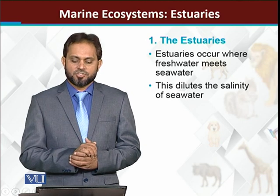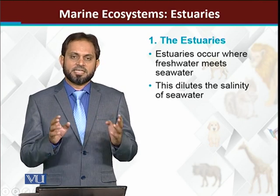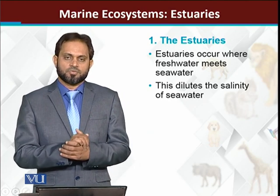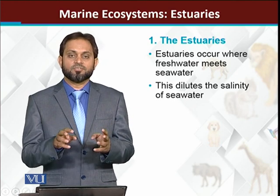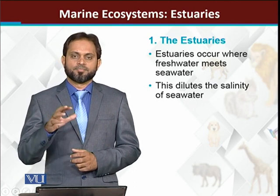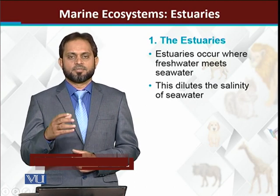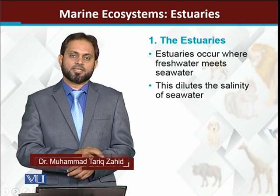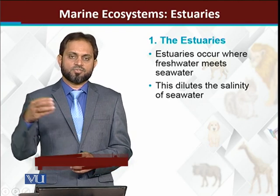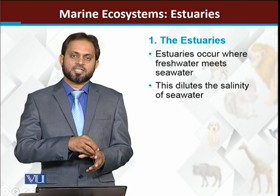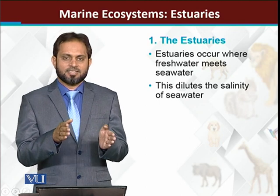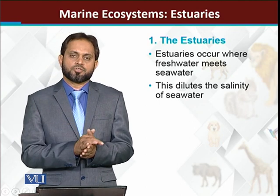Estuaries are actually the places where marine and freshwater meet each other. We can say estuaries are places where marine water is diluted — the salt concentration is diluted. In simple words, different rivers flow ultimately into the ocean or sea, and the position where the river or freshwater body meets the sea is called an estuary.